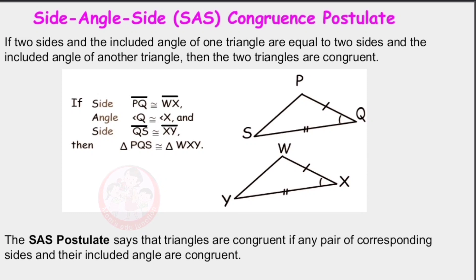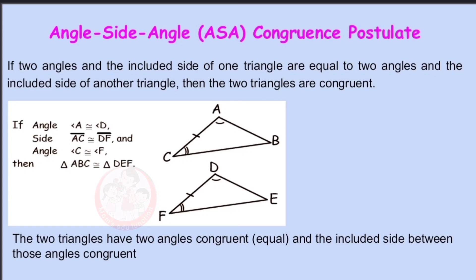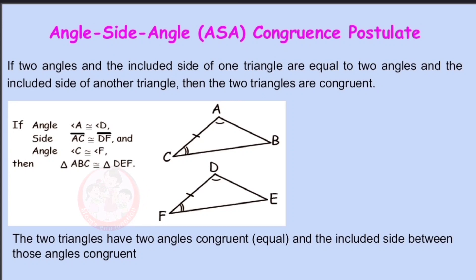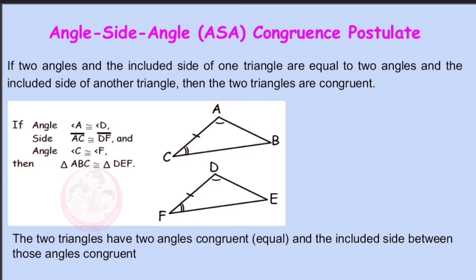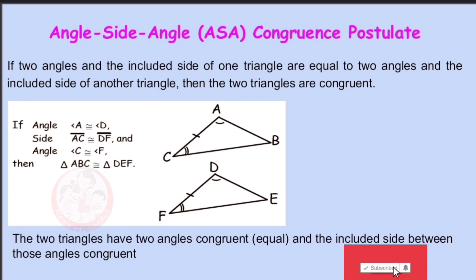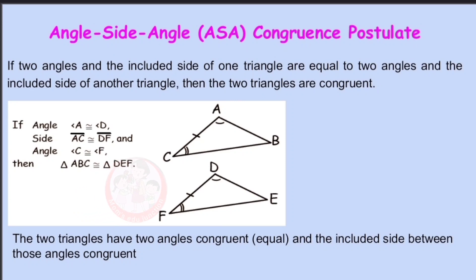Our second theorem is Angle Side Angle. If two triangles have two angles congruent and the included side between those angles is also congruent, then we say both triangles are congruent to each other. In the screen, we have two triangles named ABC and DEF. Angle A is congruent to angle D, angle C is congruent to angle F, and the included side AC is congruent to DF. Then we can say triangle ABC is congruent to triangle DEF.